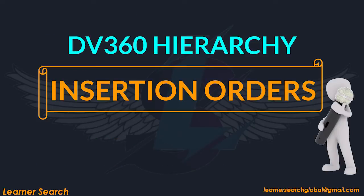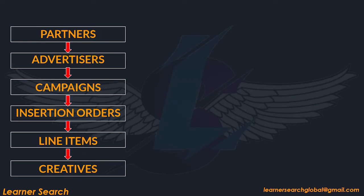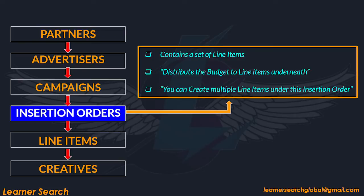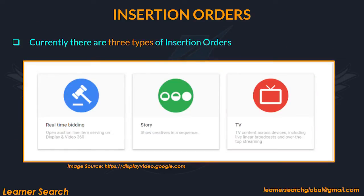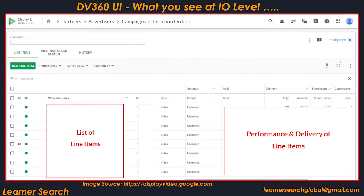Insertion orders, or IOs — in DV360, campaigns hold IOs and each IO contains a set of line items. At the IO level, it is used to distribute the budget to line items underneath. You can create multiple line items under a single insertion order. Currently, there are three types of insertion orders: real-time bidding, story, and TV. This slide shows what you see at the IO level in DV360 UI. You can see the list of line items created, and also performance and delivery numbers of those line items.